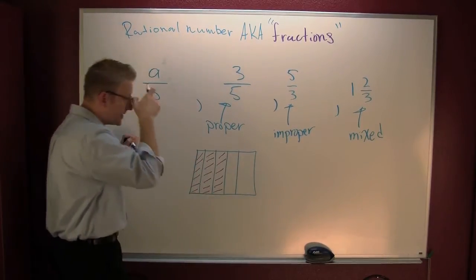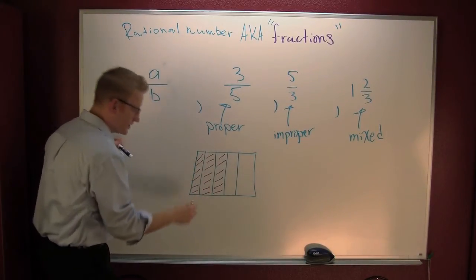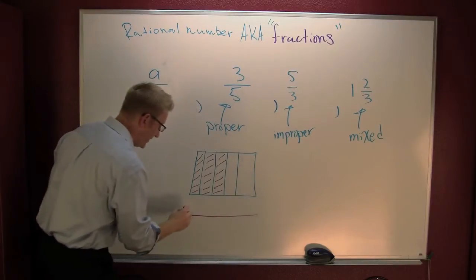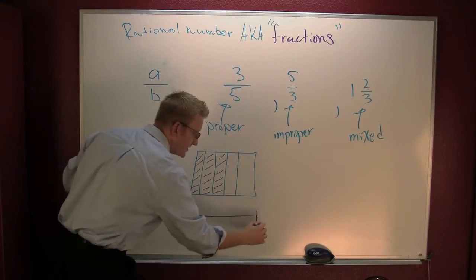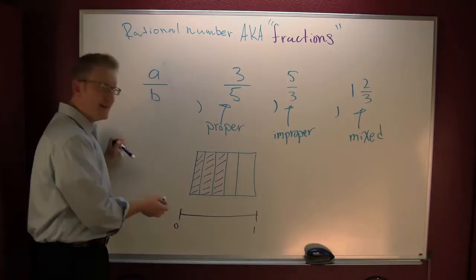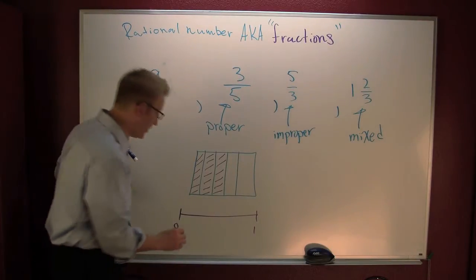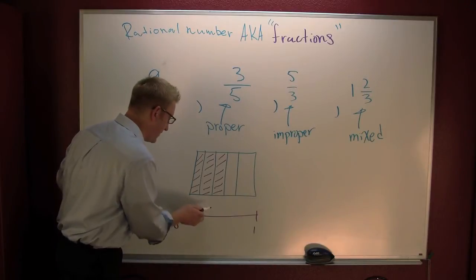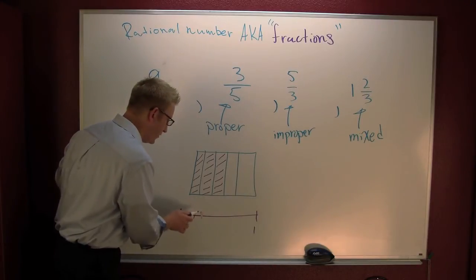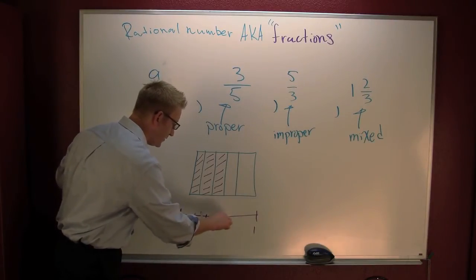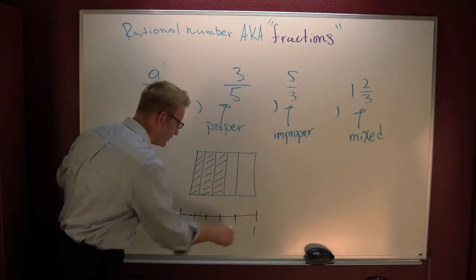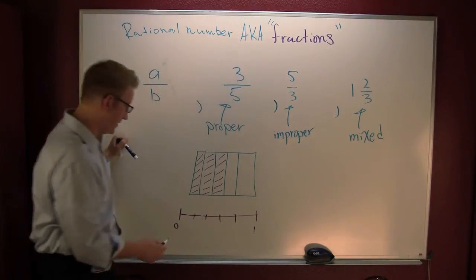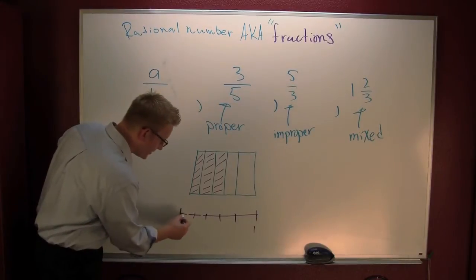But wait. There's more. If I had had something like that, I could also look at it on a number line. Here's 0. And this is 1. If I had that number line parted up into 5 parts: 1, 2, 3. That's not going to give me 5. 1, 2, 3, 4, 5.